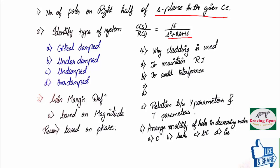Omega n you will be getting the value as 4 and zeta you will be getting 1 hence the system is critically damped.